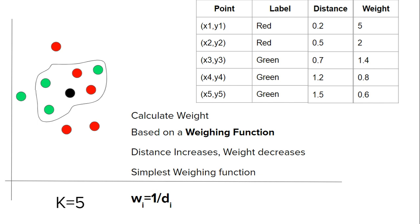Now you will simply find the weighted sum of all the red points and the weighted sum of all the green points. The weighted sum of green points is 2.8 and the weighted sum of red points is 7. Since the weighted sum of red is greater than the weighted sum of green, this new query point will be labeled as red.